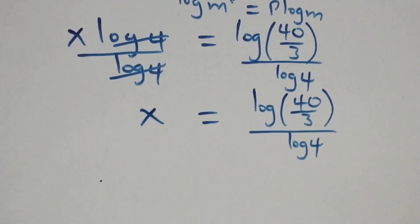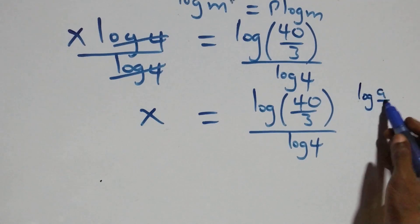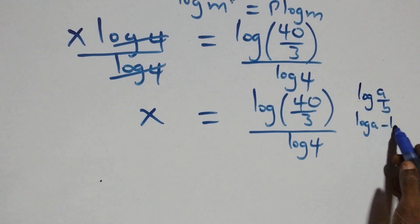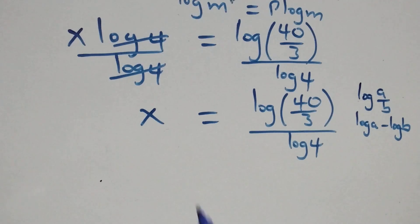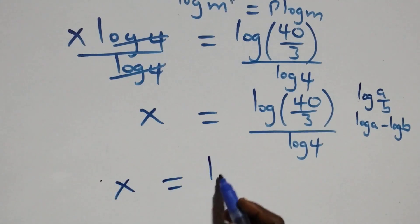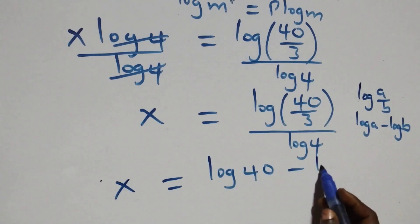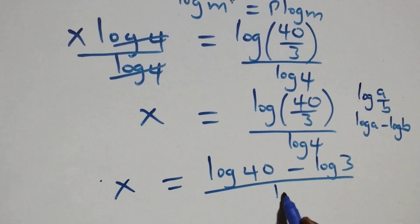From what we have here, we apply the log quotient rule: log(a/b) is the same thing as log a minus log b. So what we have here becomes x equals to log 40 minus log 3, all over log 4.